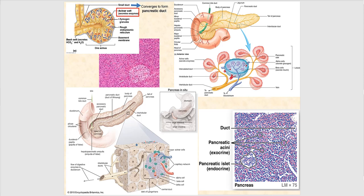Let's look at the endocrine and exocrine glands of the pancreas. The exocrine part involves acinar cells — clustered together — which produce the pancreatic juice consisting of those digestive enzymes. That juice drains into the pancreatic duct and empties into the lumen of the duodenum.